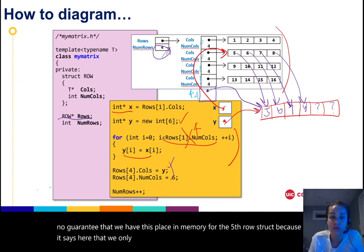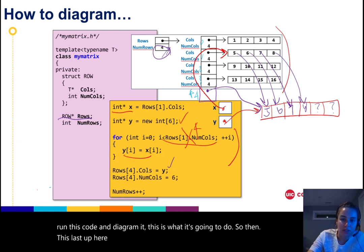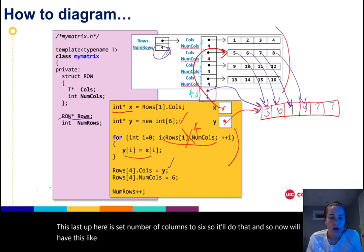But when we run this code and diagram it, this is what it's going to do. So then this last step here is set number of columns to six, so it'll do that. And so now we'll have this new array, and then here as a last step it's going to increment this to five.